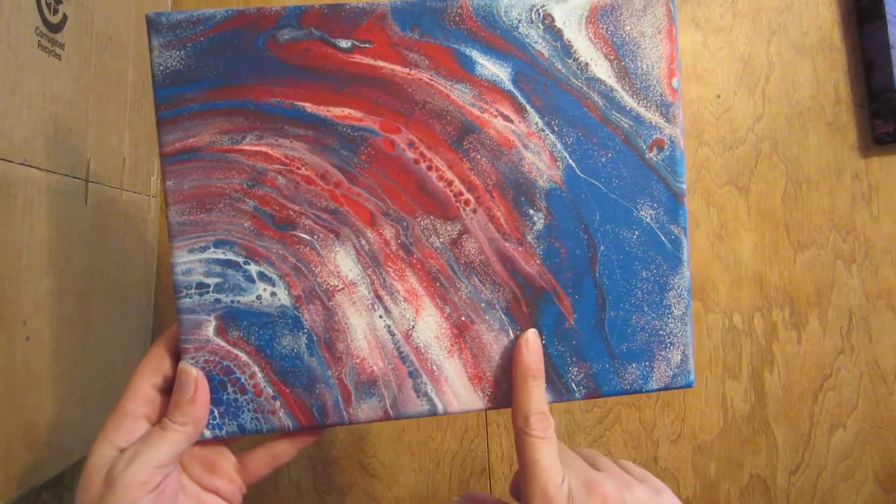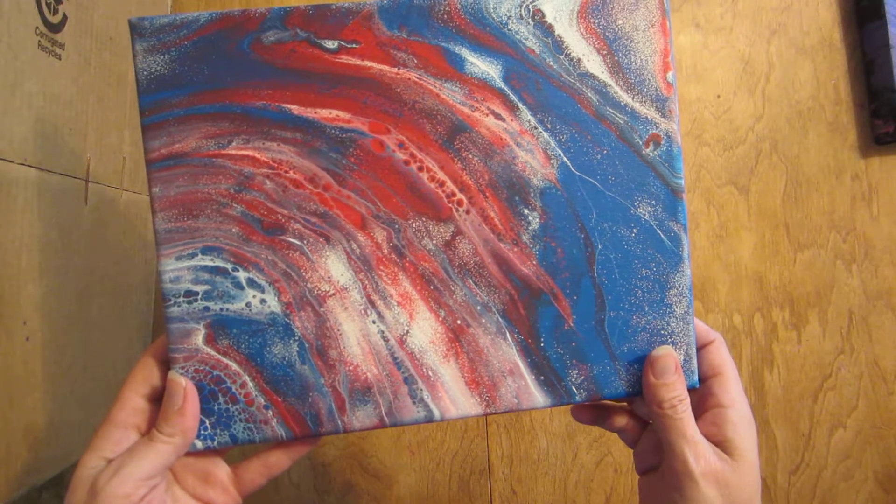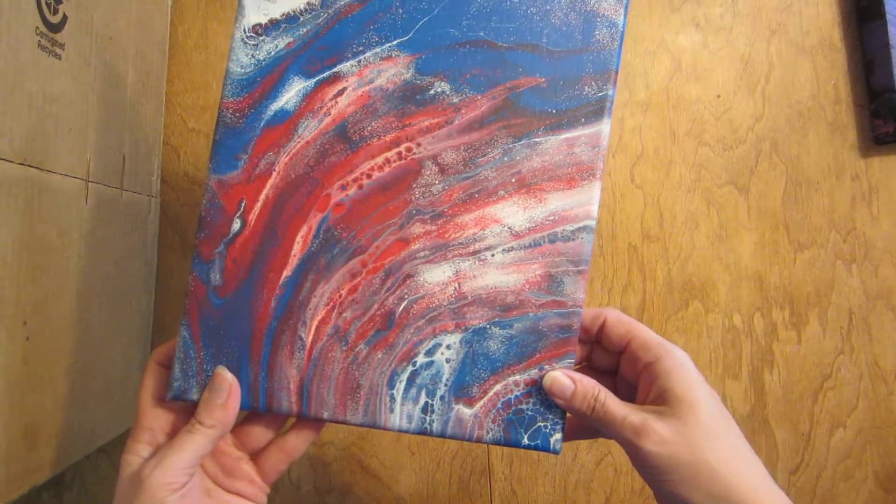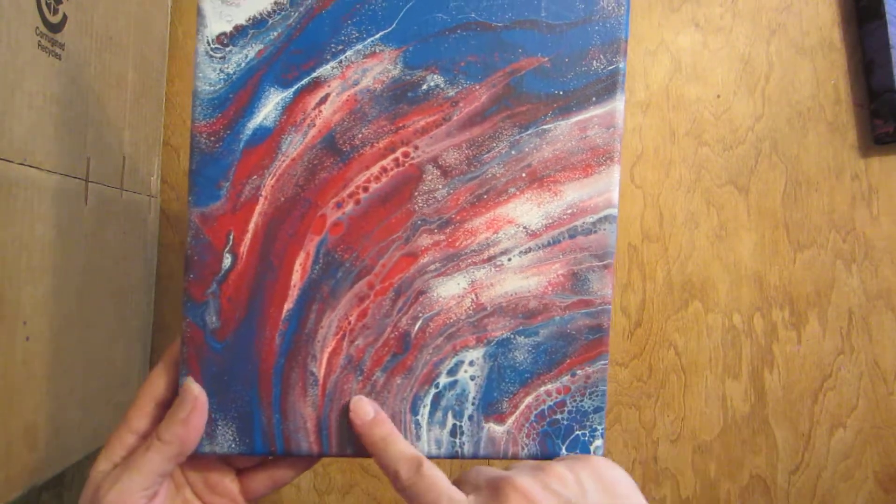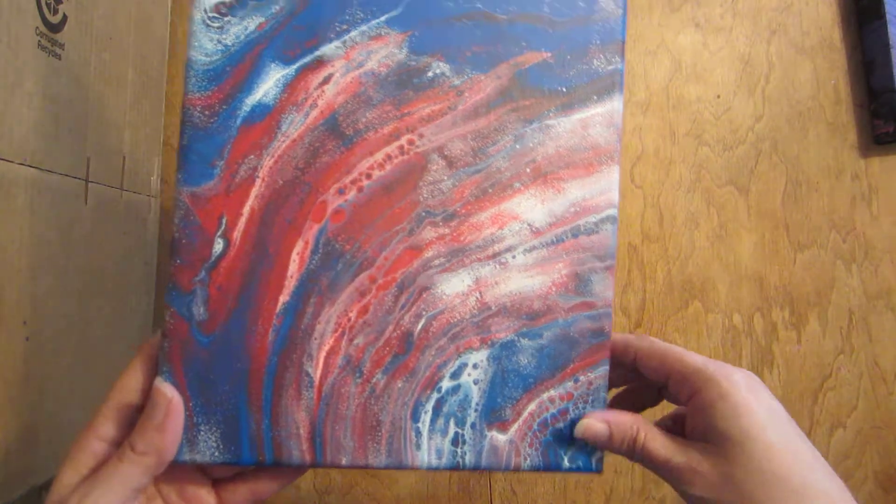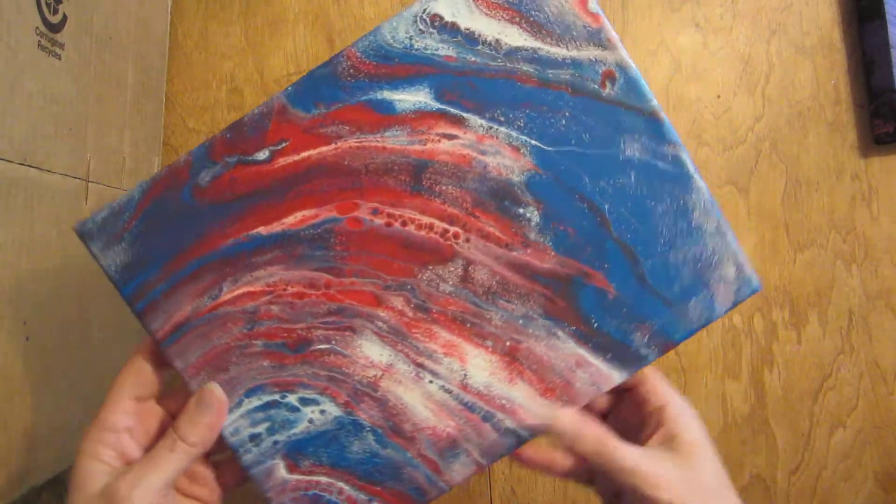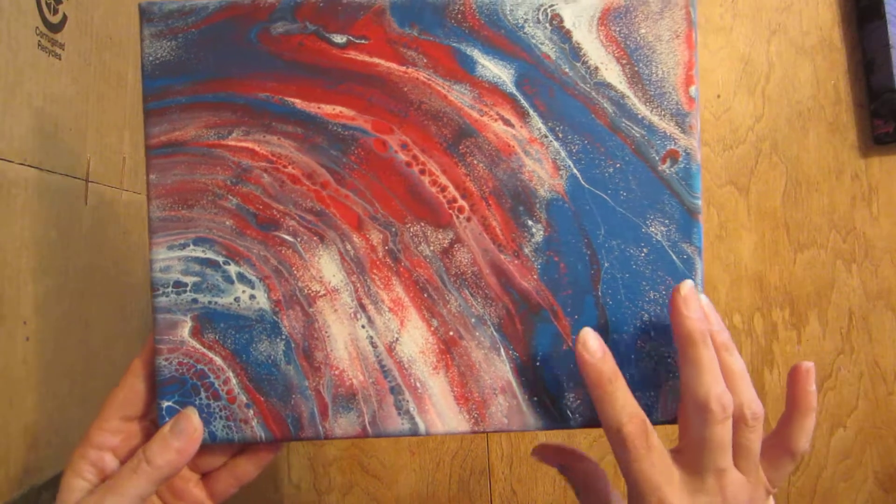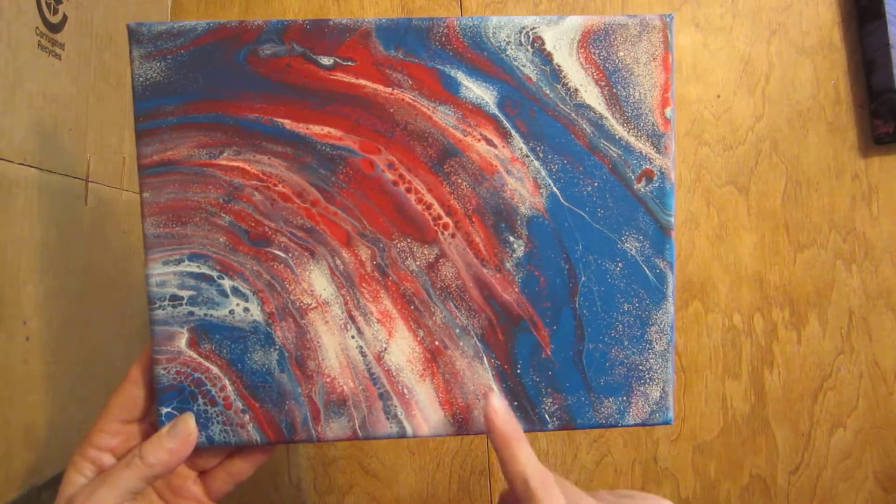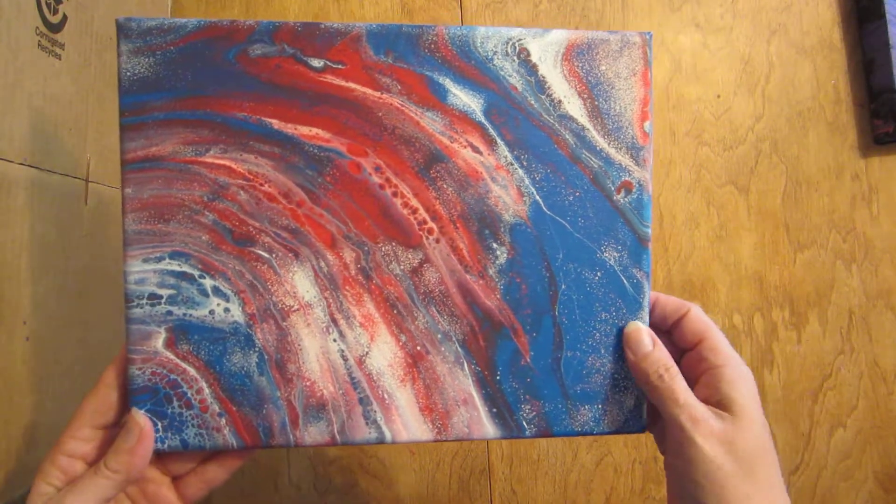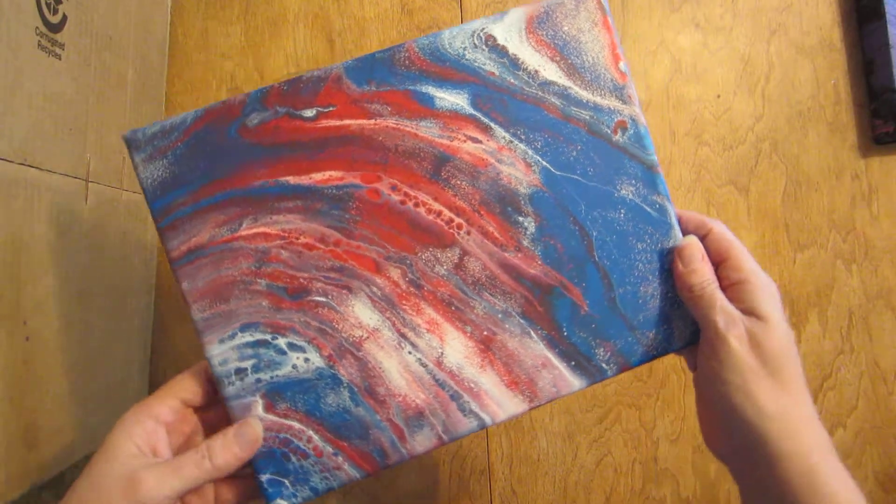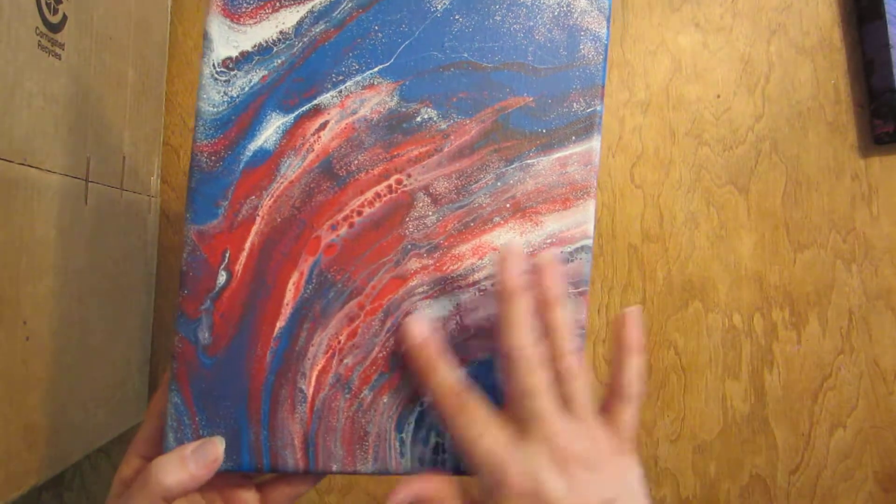This is the pour from the Boilermaker that I did. I ended up with a lot of cells in it. Didn't torch it a lot. This is how the cells came out. This was for the Pouring in Harmony base group challenge for the 4th of July. So that's what I did. I like how it dried. It dried pretty good.